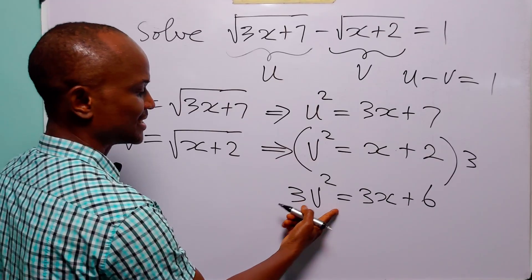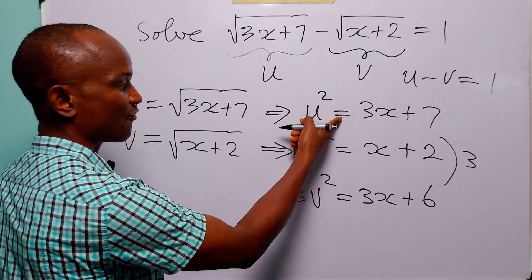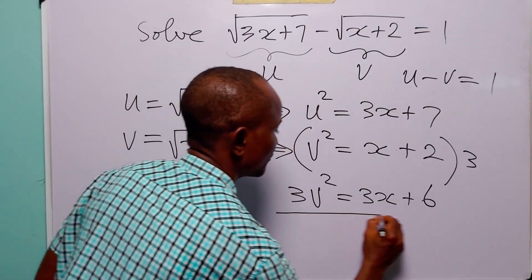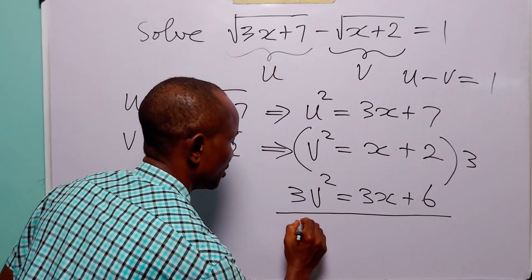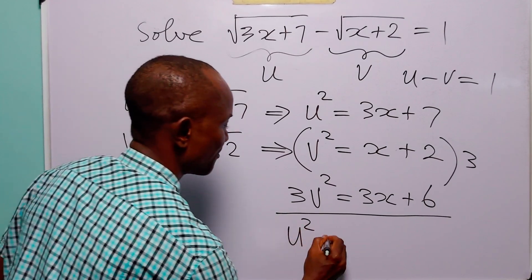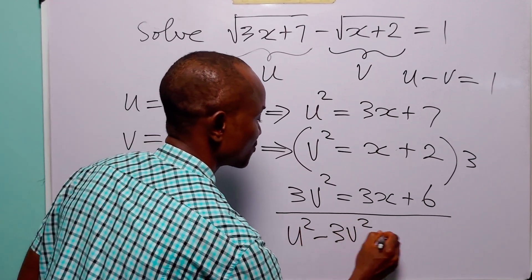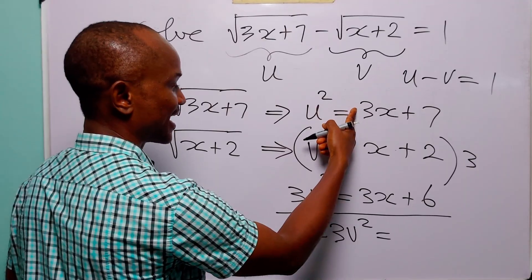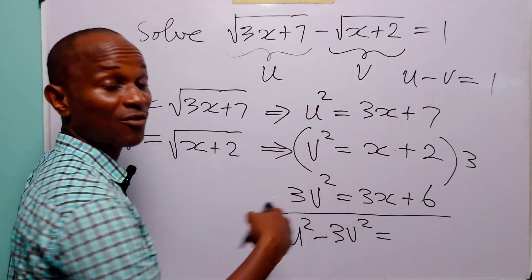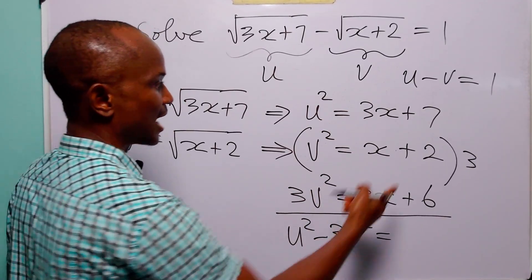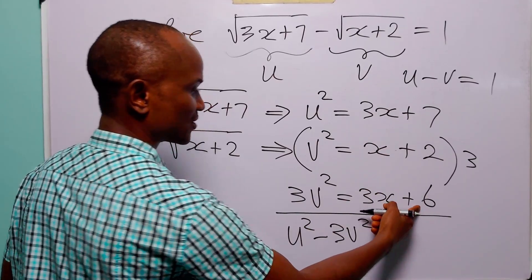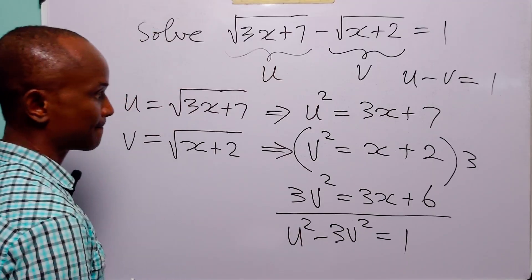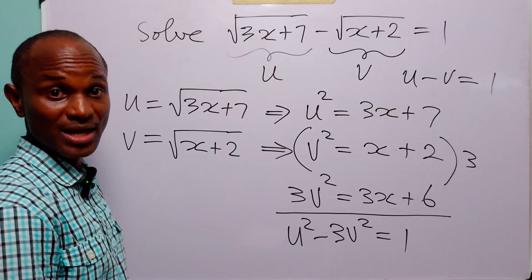We then subtract the second equation from the first. When we do that, we have u squared minus 3v squared is equal to — here we have 3x minus 3x, which is zero — and 7 minus 6 equals 1. So u squared minus 3v squared equals 1.